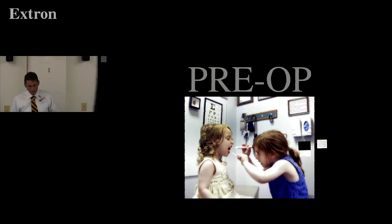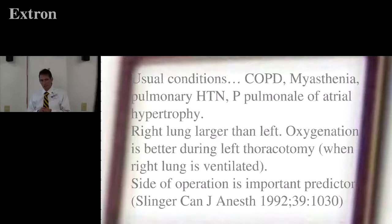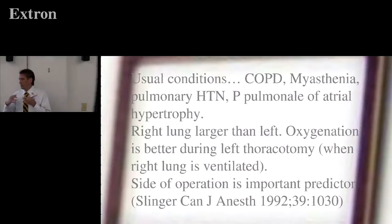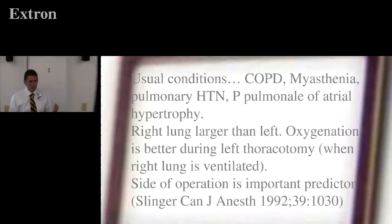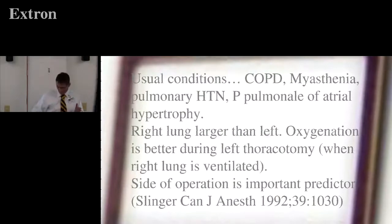Let's talk about pre-op evaluation of these patients. We're going to look for the usual conditions — think about what brought the person here in the first place. COPD, associated diseases like myasthenic syndrome, signs of pulmonary hypertension, cor pulmonale. The site of the surgery is going to make a difference when anticipating how difficult it will be to maintain oxygenation.